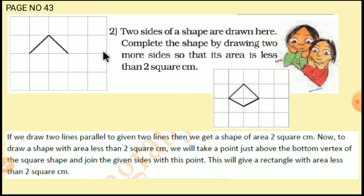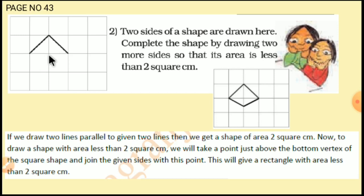Another second exercise. Two sides of a shape are drawn here. Complete this shape by drawing two more sides so that its area is less than 2 square cm. They have given us two sides of a shape. Now we should draw another 2 lines — two more sides — and the area of this shape must be less than 2.